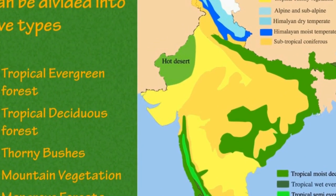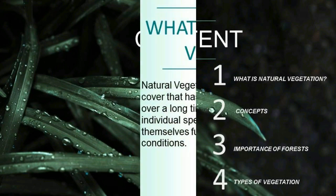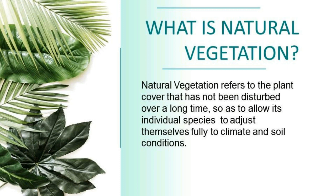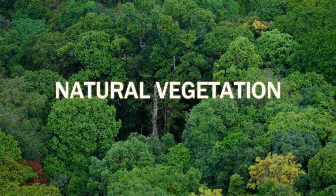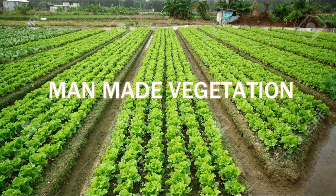Today we'll cover the basic concepts related to natural vegetation. Natural vegetation refers to a plant community which has grown naturally without human aid and has been left undisturbed by humans for a long time. This is termed as the virgin vegetation.